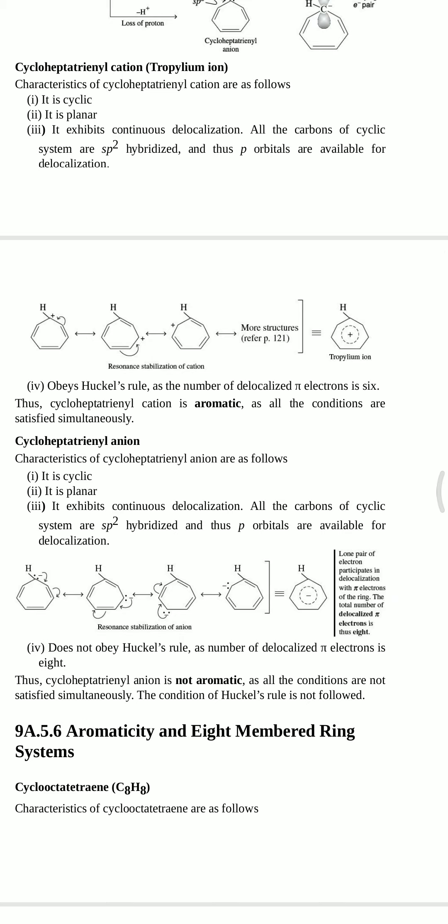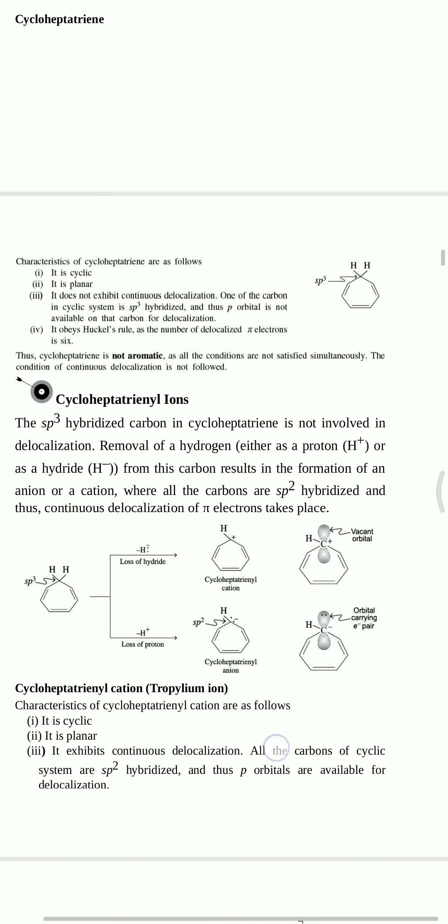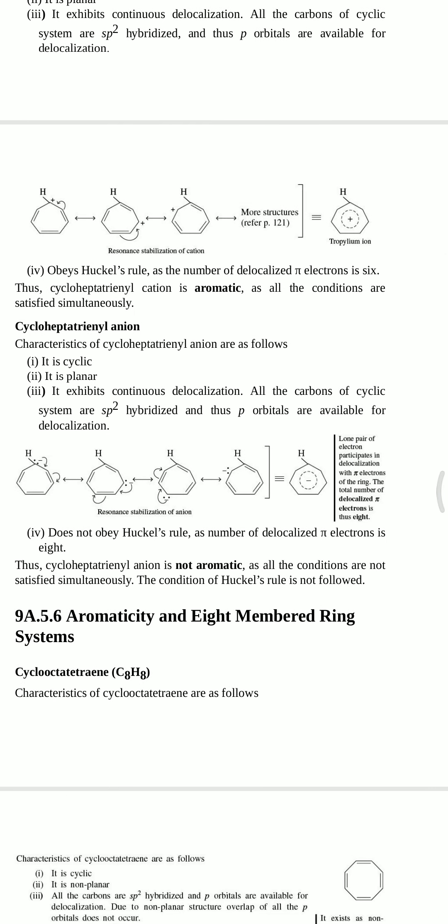For the cycloheptatrienyl anion: it is cyclic, planar, and exhibits continuous delocalization (all carbons sp2 hybridized), satisfying the first three rules. But it does not obey Hückel's rule because the anion adds extra 2 pi electrons to the original 6, giving a total of 8 pi electrons. Since 8 is not in the Hückel series (2, 6, 10...), the cycloheptatrienyl anion is not aromatic. So the cation is aromatic, the anion is not, and the simple compound is not — showing how pi electron count determines reactivity and aromatic nature.